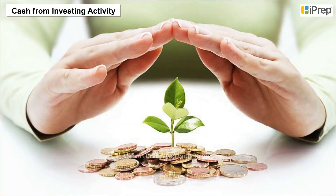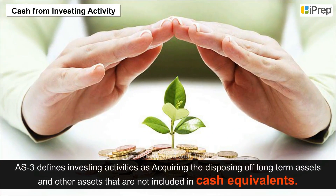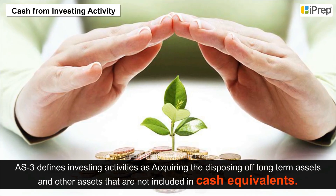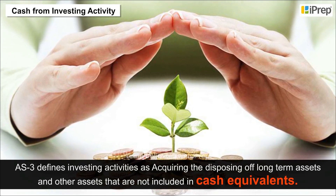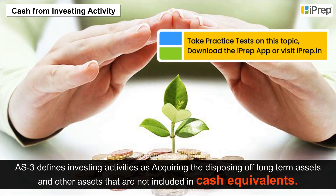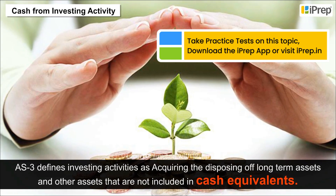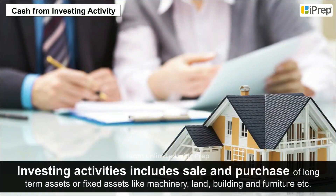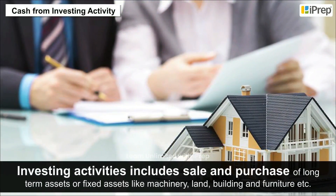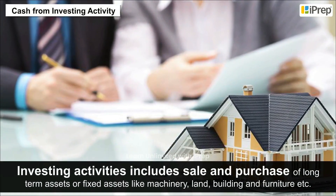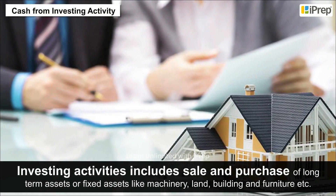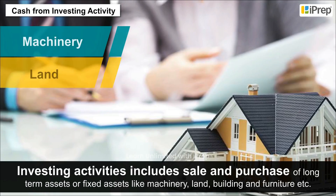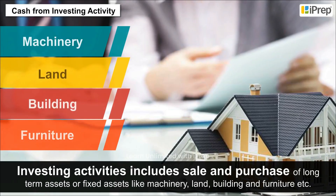Cash from Investing Activity. AS3 defines investing activities as acquiring and disposing of long-term assets and other assets that are not included in cash equivalents. Investing activities include the sale and purchase of long-term assets or fixed assets such as machinery, land, building, and furniture.